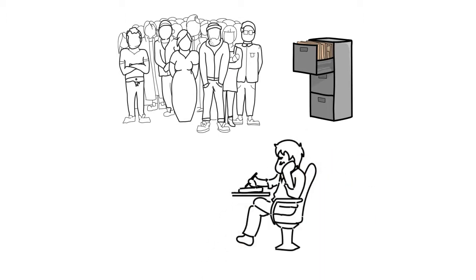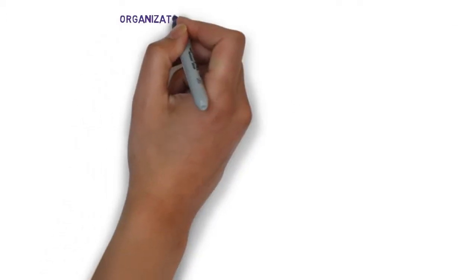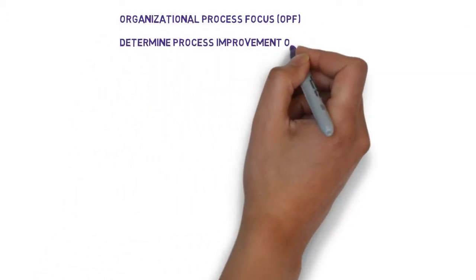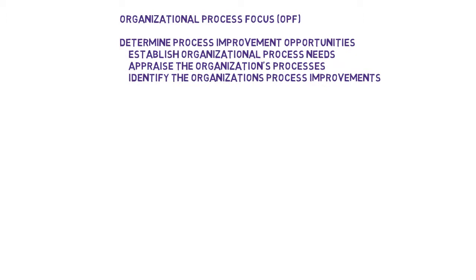So let's start with the improvement focus. The Organizational Process Focus area is fundamentally about three things: identifying improvement opportunities based on a clear understanding of the organization's strengths and weaknesses, planning and testing improvements, and deploying improvements across the organization.